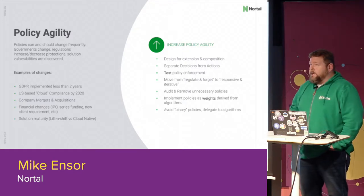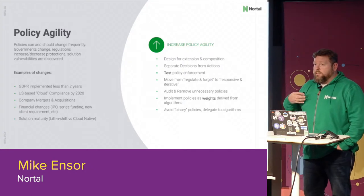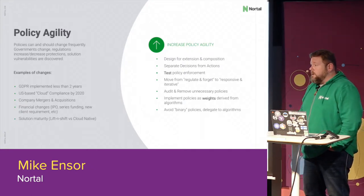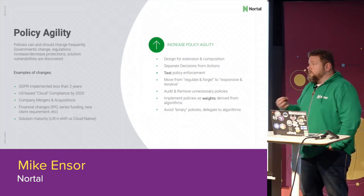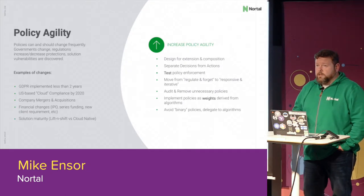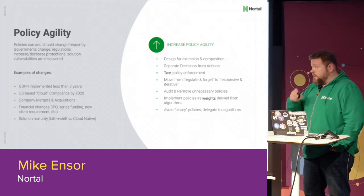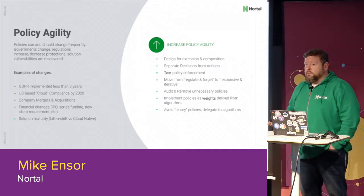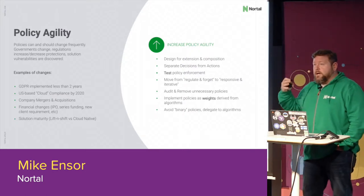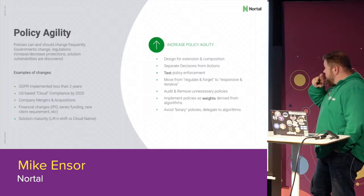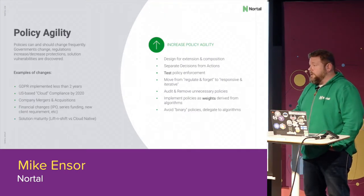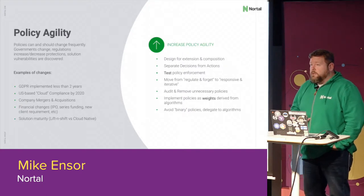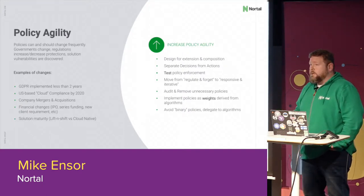When defining policies, we need to think about the agility of the policy. Things happen all the time - your company gets acquired, governments change, new politicians come in, the industry develops new software. Policies need to be adaptable and changed with the times so you don't end up with weird outdated laws like the one in Oklahoma City where you can't walk an elephant down the street. Policies need to be designed for extension and composition, with a life cycle, testability, and we need to move away from regulate-and-forget toward a more responsive and iterative approach.